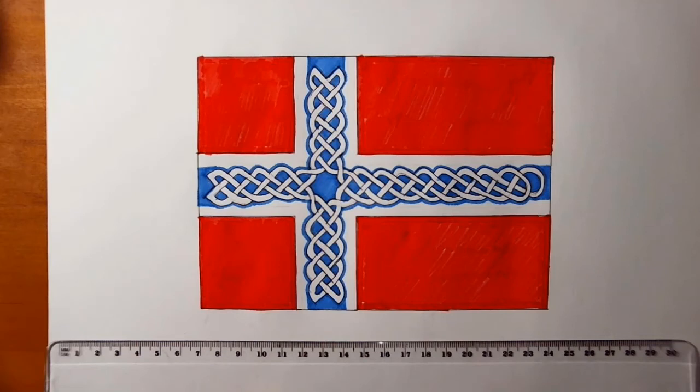Hi again. Today I'm going to draw this flag that looks similar to the Norwegian flag. The main difference is that in the middle of the Norwegian flag there's usually a Nordic cross. I'm replacing that with a fairly intricate looking Celtic knot.